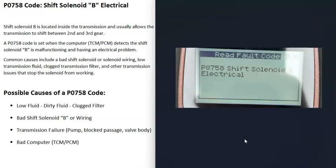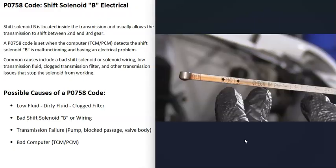The first thing to do whenever you have any transmission problems is go check your transmission fluid and be sure it's at the correct level. Be sure it's not low or extremely dirty, because low or really dirty transmission fluid can cause issues — it can cause transmissions to do strange things. Some newer vehicles no longer allow you to check the transmission fluid; it'll all be enclosed with no dipstick. But if you can check it, make sure it's at the correct level and not super dirty.